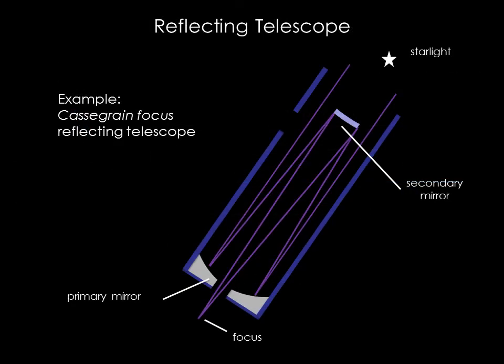A reflecting telescope uses a precisely curved primary mirror to gather light. This mirror reflects the gathered light to a secondary mirror that lies in front of it. The secondary mirror then reflects the light back to a focus where the eye or the detector can observe it. For a cassegrain focus, like the one shown here, this is through a hole in the primary mirror.